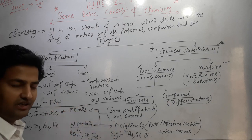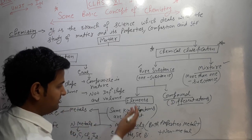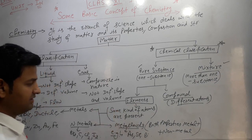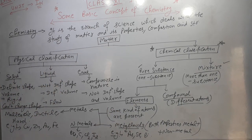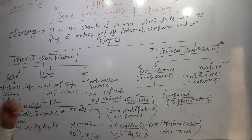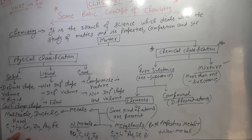According to the periodic table, three types of elements are present. Metals — which you studied in 10th class — are malleable, ductile, hard and sonorous. Examples of metals are copper, zinc, gold and iron.